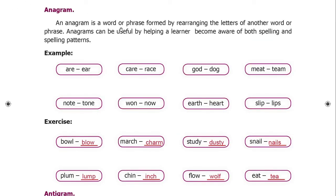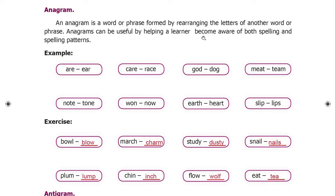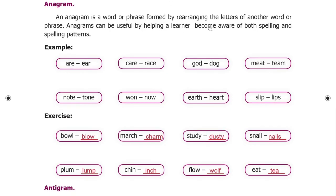An anagram is a word or phrase formed by rearranging the letters of another word or phrase. Anagrams can be useful by helping a learner become aware of both spelling and spelling patterns.